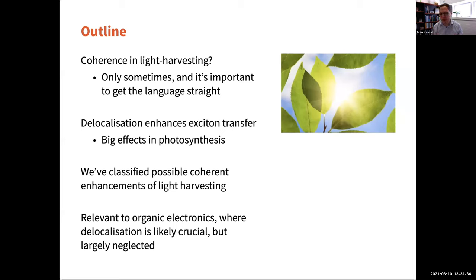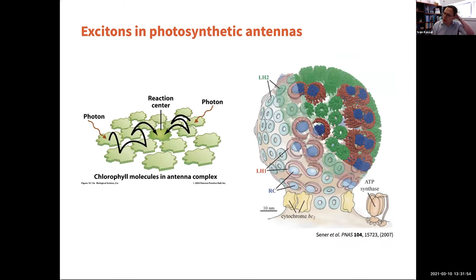I'll bring up equations a bit later to show how we've classified possible coherent enhancements of light harvesting — all the different possibilities of how different kinds of coherence might enhance the efficiency. Then I'll show how this is relevant to organic electronics, where delocalization is likely to be crucial for mobilities and IQEs of organic photovoltaics, but has largely been neglected in simulations because of the computational cost.